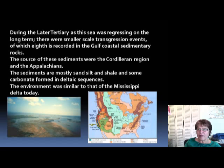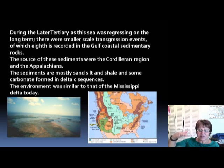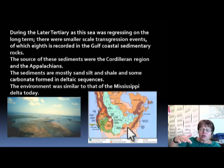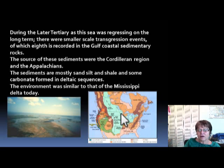In the Gulf of Mexico during this time, the global sea level was coming down slowly — a regression — however within that, there were smaller-scale transgressions and regressions. You have to imagine that the Mississippi River area was periodically under water, and all the sediment from the Appalachians and the Cordilleras was coming in via the river. This whole area was like a big embayment, a big bay from the Gulf of Mexico, and it has been filled up cyclically with deltaic sediment.